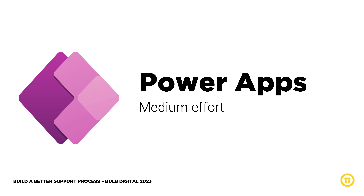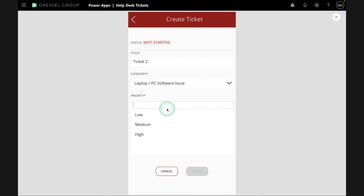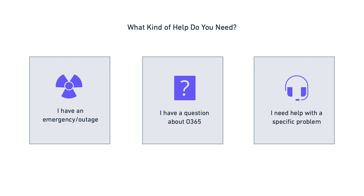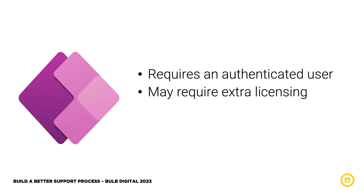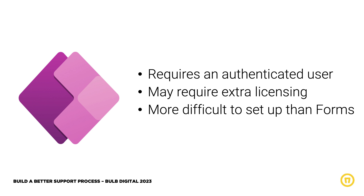The next option for intake is Power Apps. Power Apps is a medium-effort solution — it's great if you want a stepped process or a custom look and feel to your form. We used it in this instance because we wanted three different avenues that a user could go down, and we wanted to be intentional about upfront showing those options with clear directions based on which one they chose. A couple of things to know before choosing Power Apps: it requires an authenticated user in your tenant, it might require extra licensing, and it's more difficult to set up than a form. Choose Power Apps if you want something more complex than Forms with a custom experience, but you don't need external users submitting to your form.